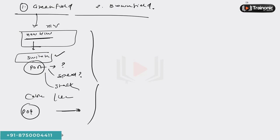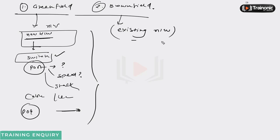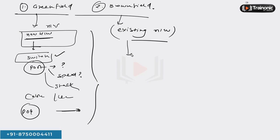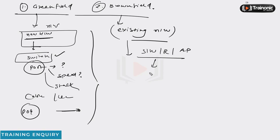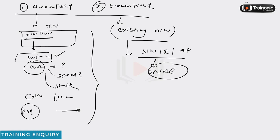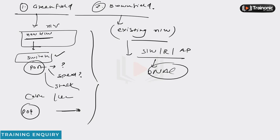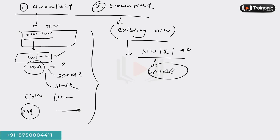In a brownfield deployment, you already have an existing network. You have to make necessary changes — you might have to upgrade protocols, and check whether your existing switches, routers, and access points are compatible with the DNA Center appliance. If compatible, you upgrade the operating system or firmware and then manage everything from a centralized point. There are obvious challenges in brownfield deployment since you have an existing network and need to make changes to support SDA.